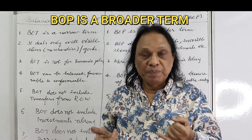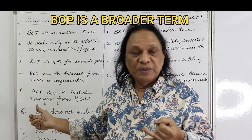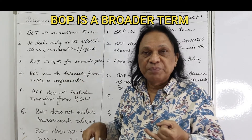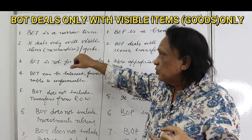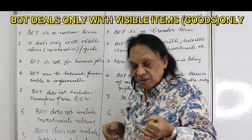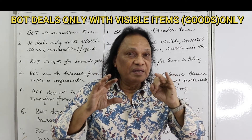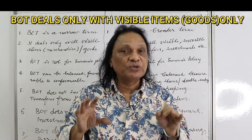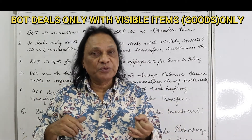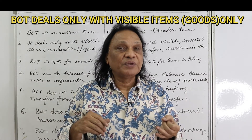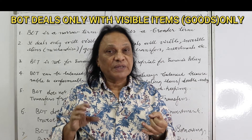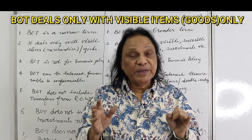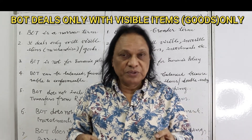As you go and see the difference, you'll come to know why BOT is a narrow term and BOP is a broader term. BOT deals only with visible items — we call them merchandise or goods. Because BOT is the difference between exports and imports of only visible items, visible merchandise — only goods which you can see and touch. This can be export of cars, import of cars, export of raw materials, import of mobile phones. So those are called visible items in economics. That's why BOT is a narrow term.